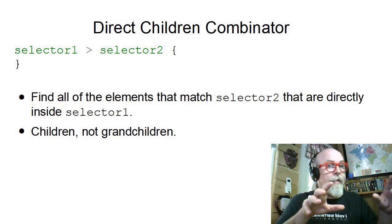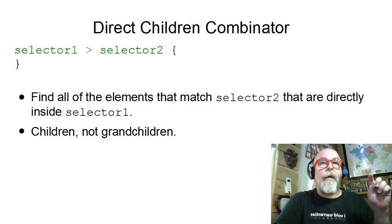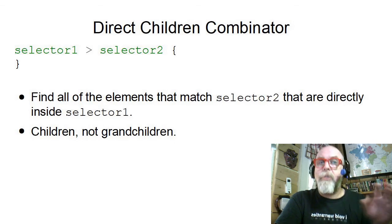It gets any descendant that matches, but this is just the descendants that are directly inside of selector 1. So these are get the children, not the grandchildren or the great-grandchildren, just the children. Let's take a look at what that looks like.